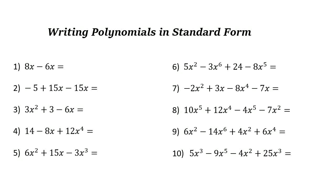Writing polynomials in standard form means writing the terms with the highest degrees first. The terms of a polynomial are separated by addition — the plus and minus signs. Here we have two terms, this one has three terms, three terms, and here we have four terms: one, two, three, four terms.